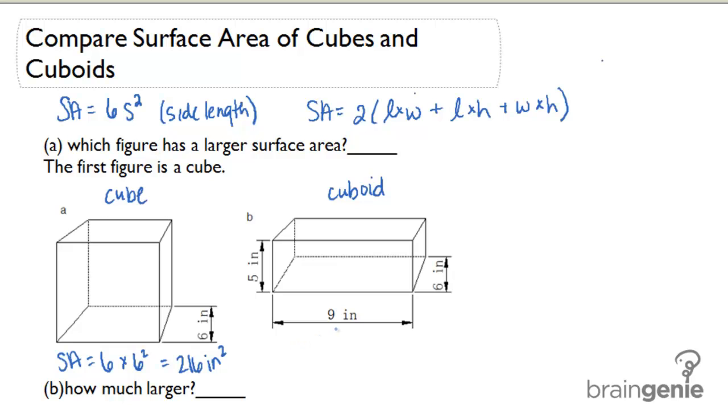For the cuboid I have to figure out my dimensions. Length is going to be 9 inches, width is going to be 6 inches, and height 5 inches. Let's plug these into the formula.